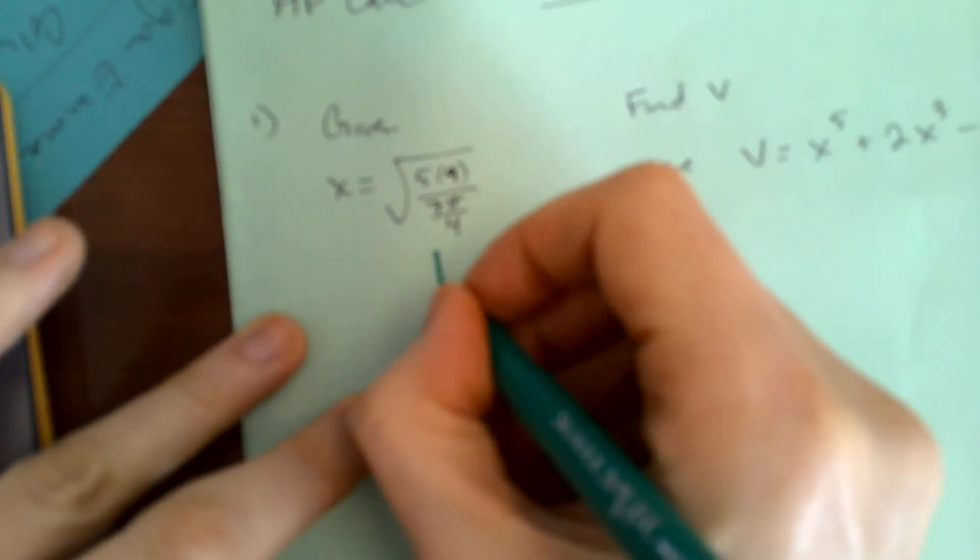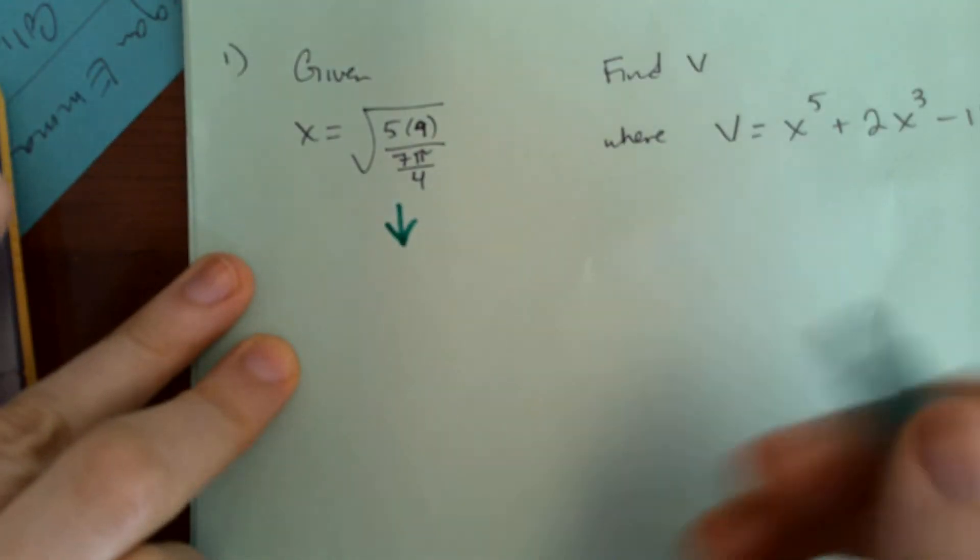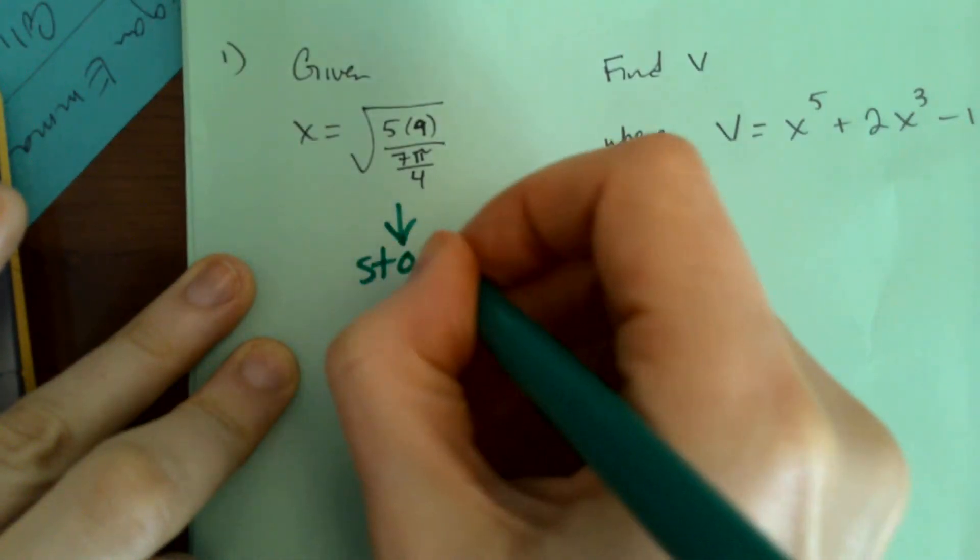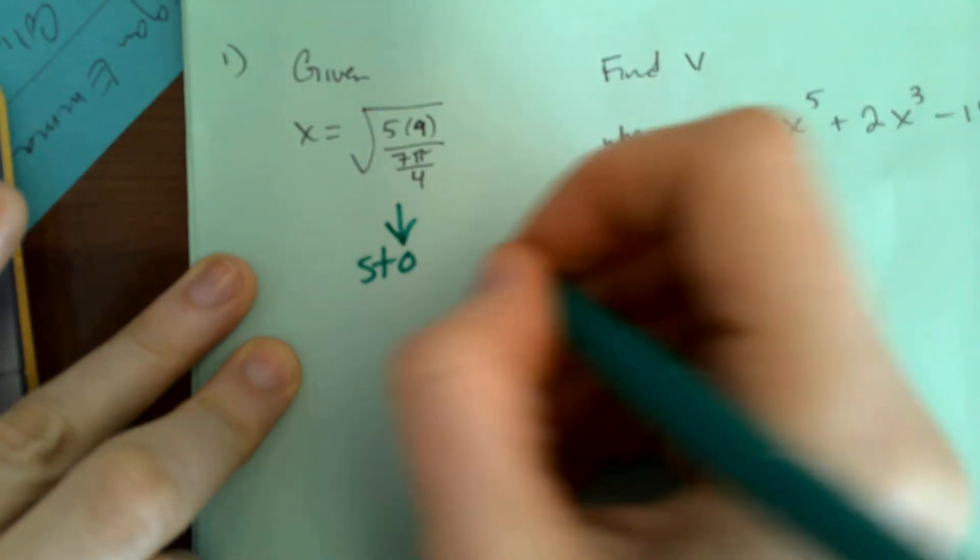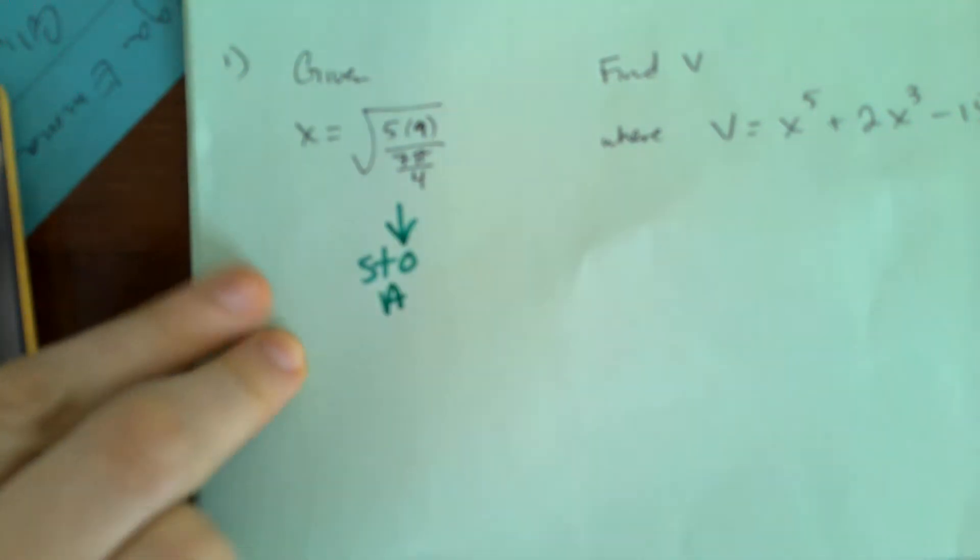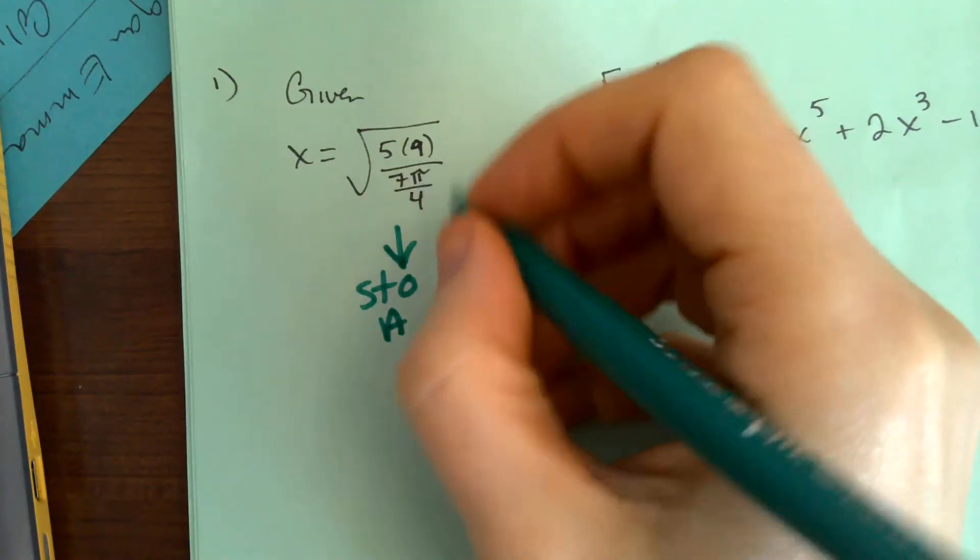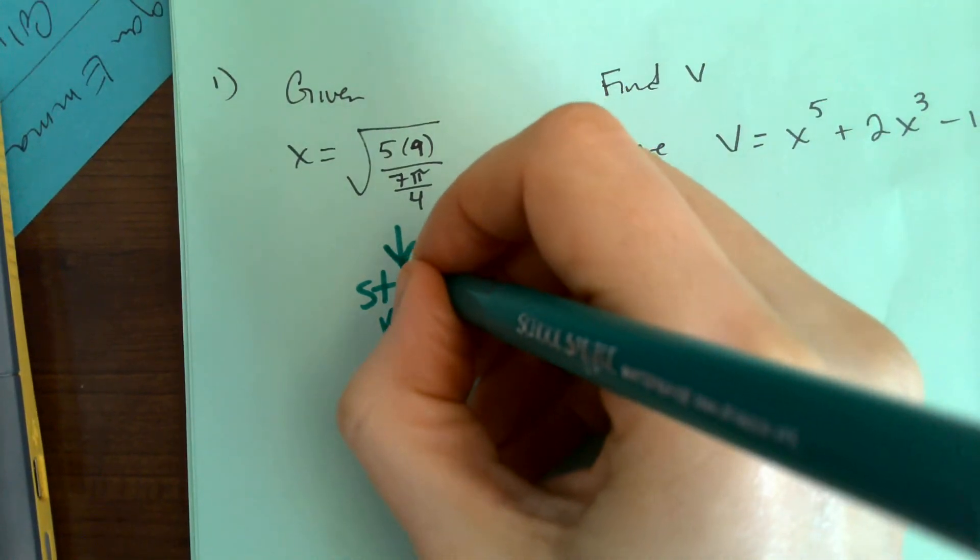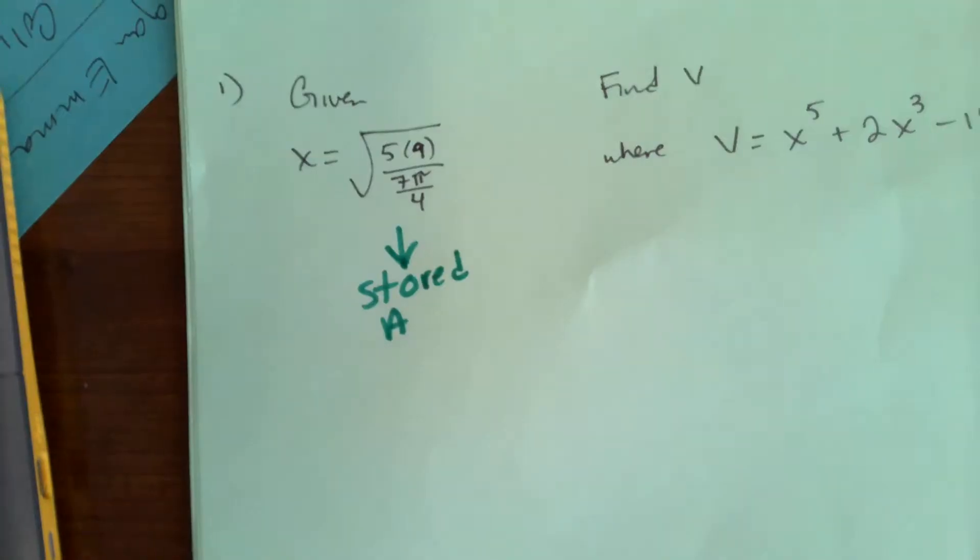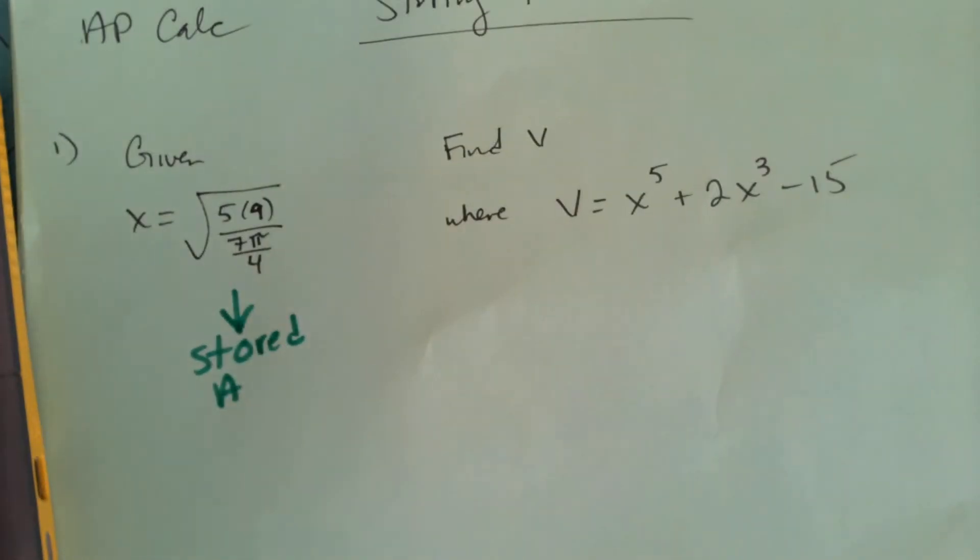Okay. So, and then I'm going to write down, I'm going to say stored. I'll just say sto A. All right. Anyone reading my paper would know that I stored that as A. I'll say stored A.